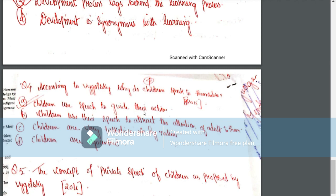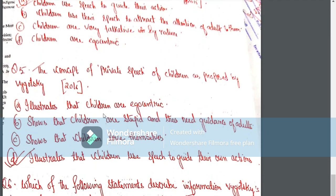Why do children speak to themselves according to Vygotsky? Children use speech to guide their own actions. Children use speech to attract the attention of adults. Children are very talkative by nature. Children are egocentric. The answer is: children use speech to guide their action.